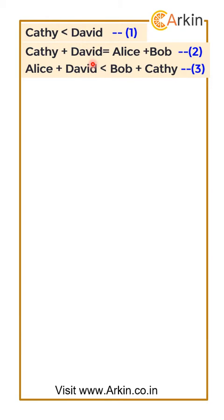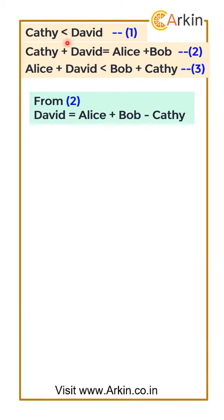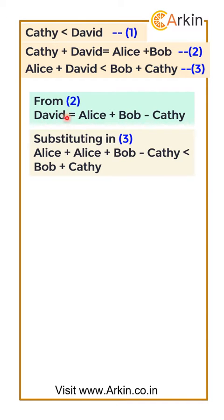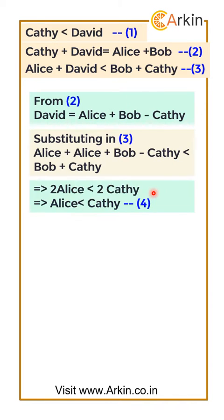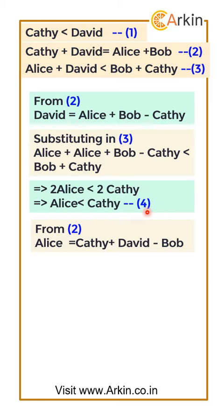From equation 2, we find the value of David: David equals Alice plus Bob minus Kathy. Substituting this value of David into equation 3, we get Alice plus (Alice plus Bob minus Kathy) is less than Bob plus Kathy. Solving this, we get that Alice has less money than Kathy — let's write this as equation 4.